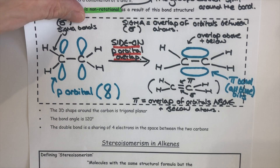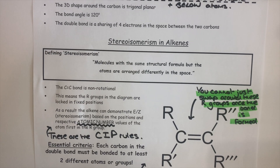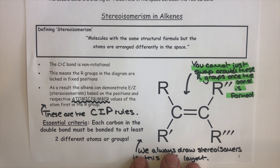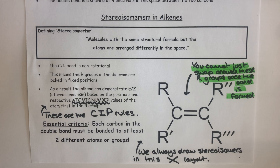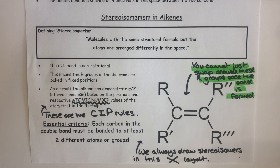The next part of alkenes to consider is stereoisomerism — a real biggie. There is a follow-up video giving a summary of all the features of stereoisomerism in alkenes. Stereoisomerism is defined as molecules with the same structural formula but atoms arranged differently in space. This is a confusing point in organic chemistry unlike anything seen before, and very different from the structural isomerism introduced in the previous topic.